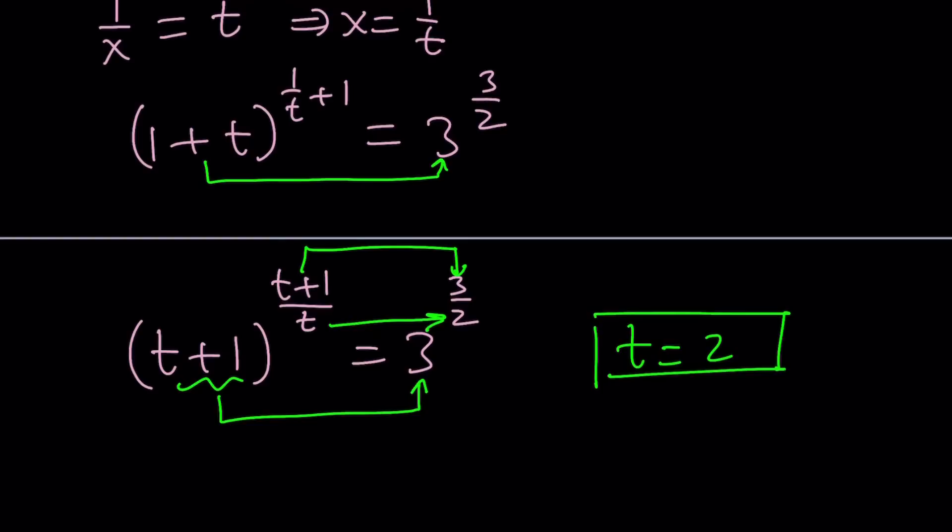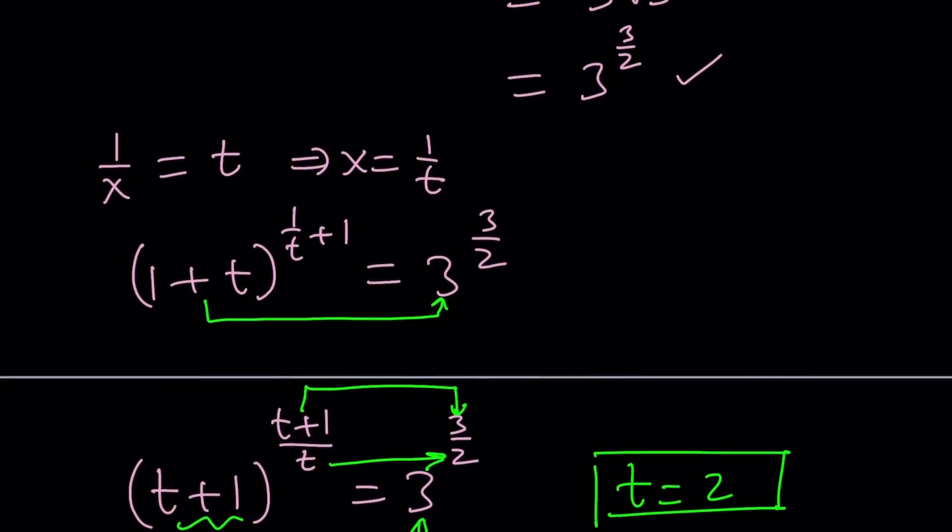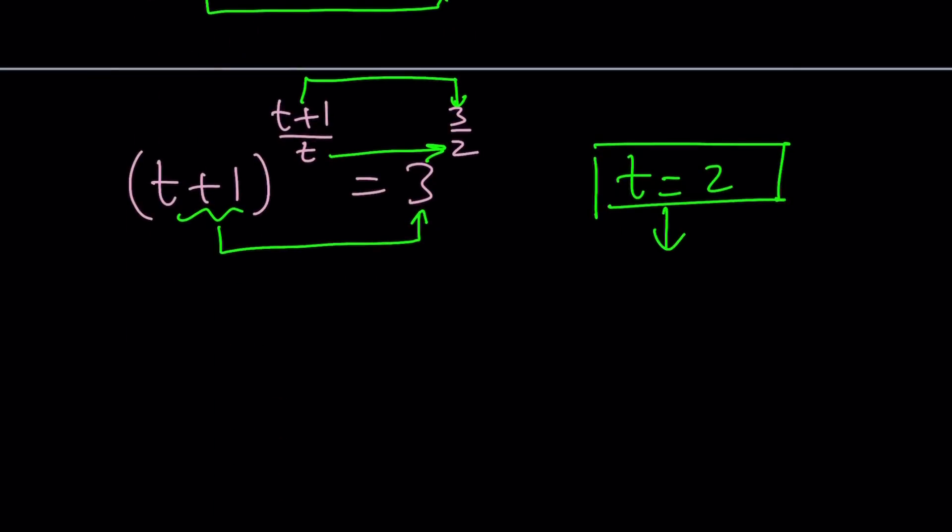So t equals 2 means what? We said that t is equal to 1 over x, or x is 1 over t. From here, x becomes 1 half. Now, if you consider the original equation, it probably wouldn't be too hard to guess x could be 1 half either, even though you're going to have to do a little bit more work.